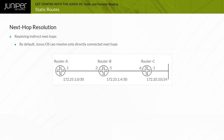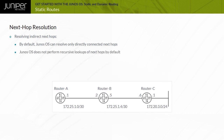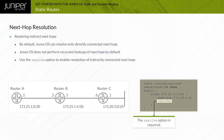By default, Junos OS requires that the Next Hop IP address of static routes be reachable using a direct route. Unlike software from other vendors, Junos OS does not perform recursive lookups of Next Hops by default. You can alter this default behavior using the Resolve CLI option, but a route to the indirect Next Hop is also required. Indirect Next Hops can be resolved through another static route or through a dynamic routing protocol.